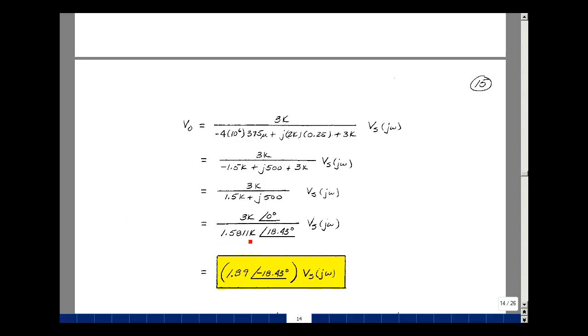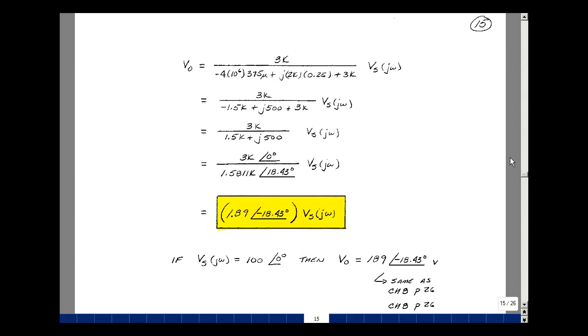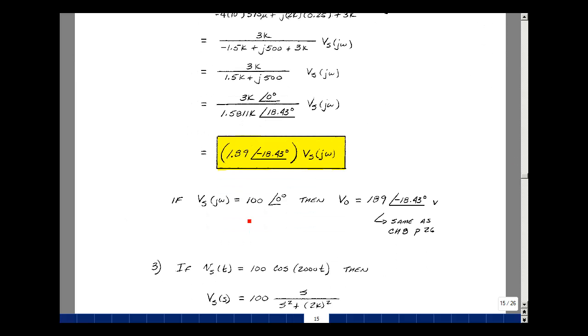The numerator is just 3k at angle 0. 3k divided by 1.5811k is 1.89, and 0 minus the denominator angle is negative 18.43 times V sub S of J omega. If we let V sub S equal 100 at angle 0, multiplying gives 100 times 1.89, so 189, and 0 plus this angle is still minus 18.43. This is the same result we had in chapter 8 on page 26.